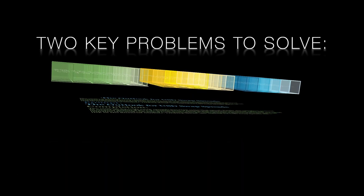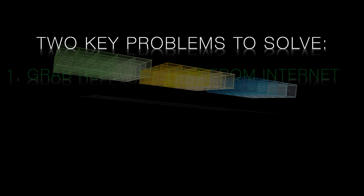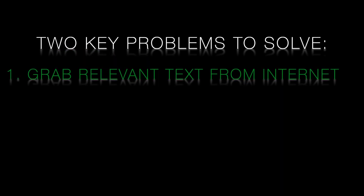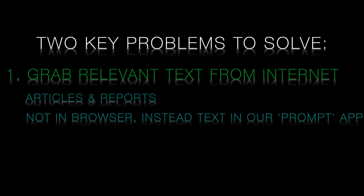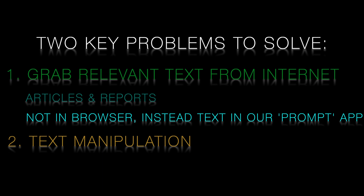There are two specific problems that we must solve. Firstly, we want to be able to grab relevant text to train our model from the internet. This text will likely be in the form of articles and reports that we will use to build our prompts and completions. Rather than have these articles pop up nicely formatted in our browser, we'd instead like just the text of these articles to pop up in an app that we write so that we can generate some prompts and completions from this text. Secondly, once we've got this text in our app, we need to do some manipulation on it so that we can break it up into prompts and completions.